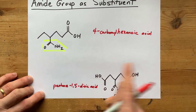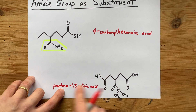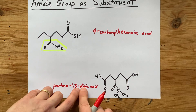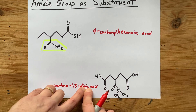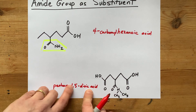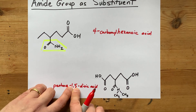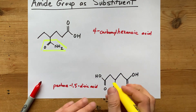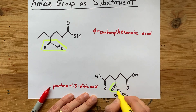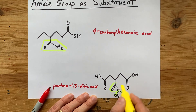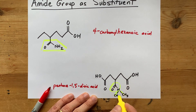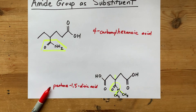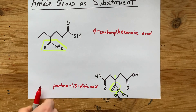Now, number one, it's five carbons long. All those carbons are single bonded to each other. We have two carboxylic acid groups, and I'm telling people explicitly it's at carbons number one and five. But now we have this amide group with two separate substitutions on the N attached to carbon number three of the chain. So, how are we going to do it?